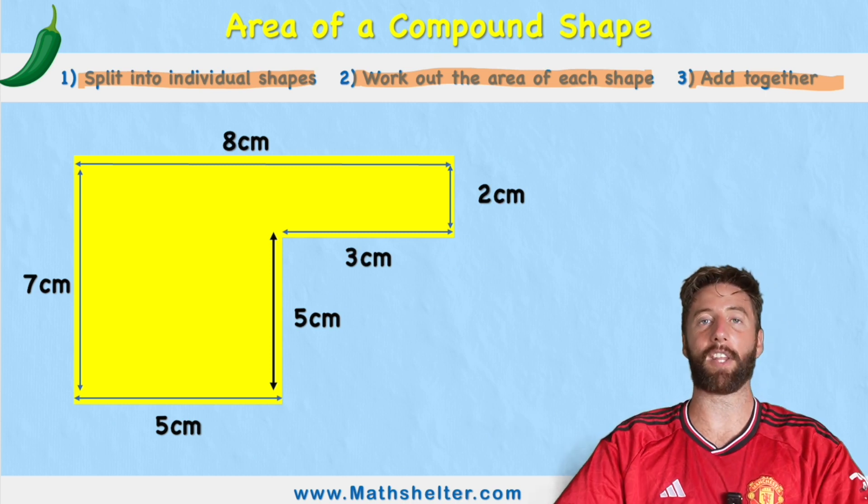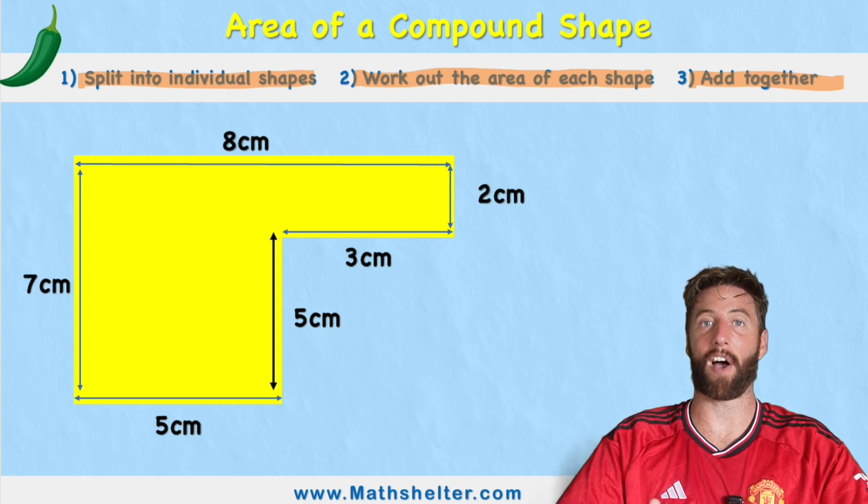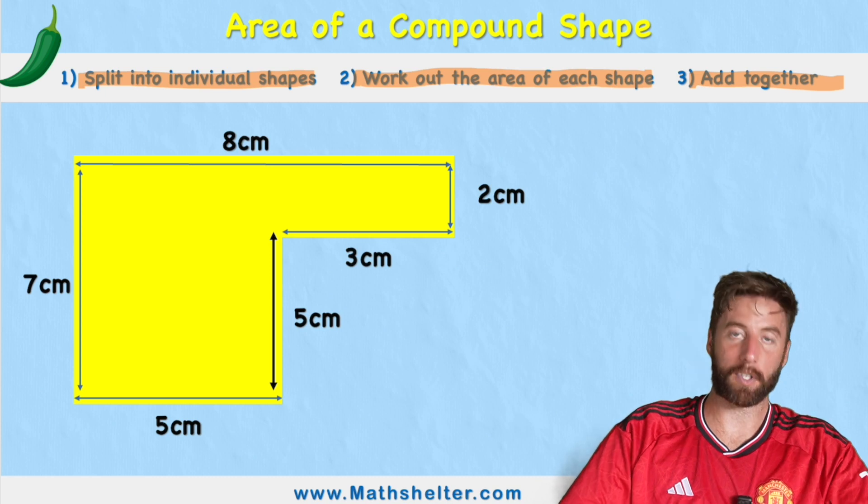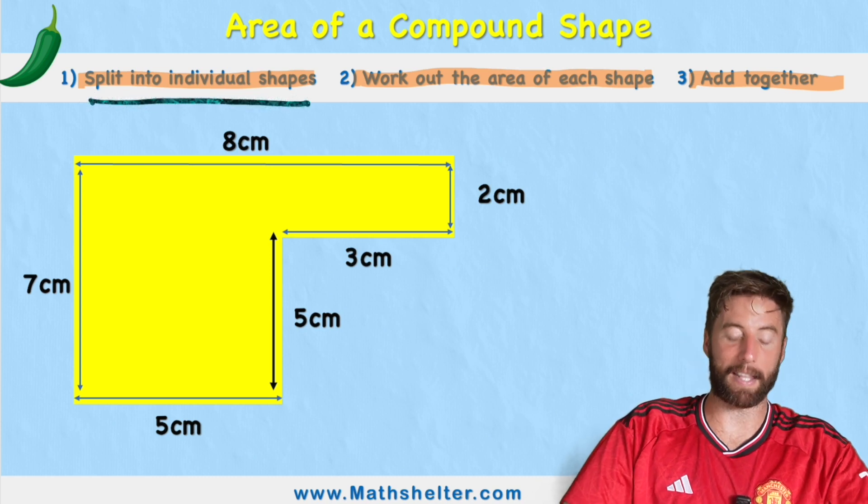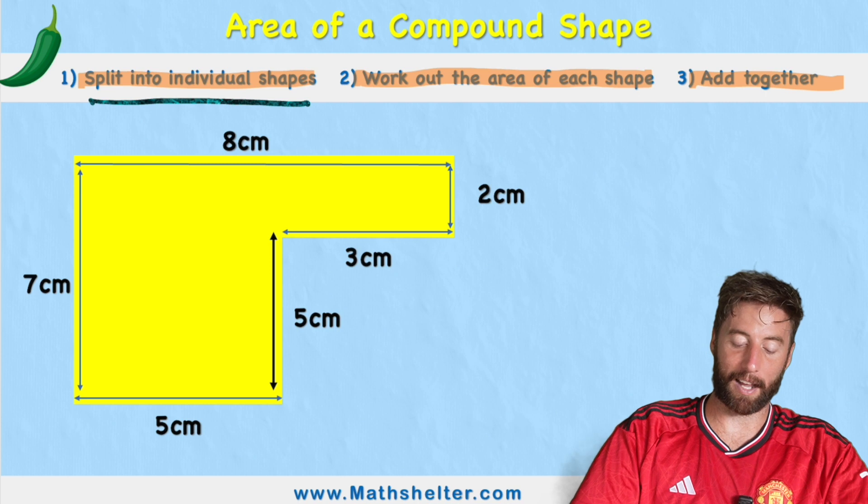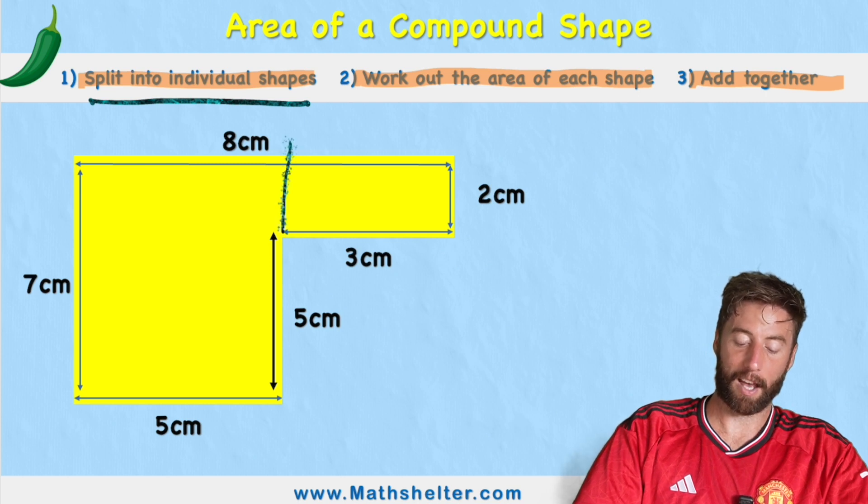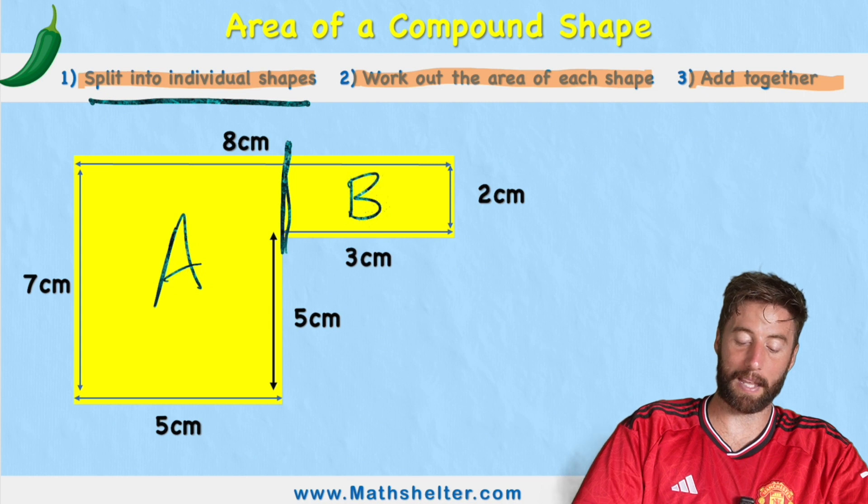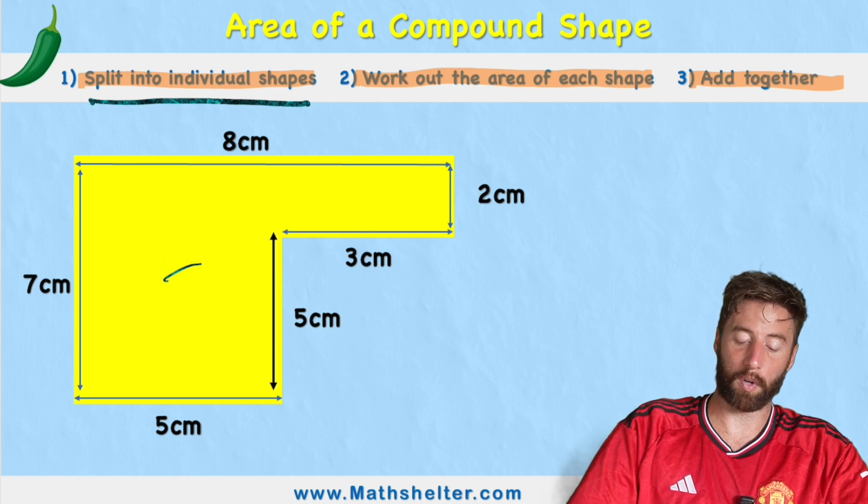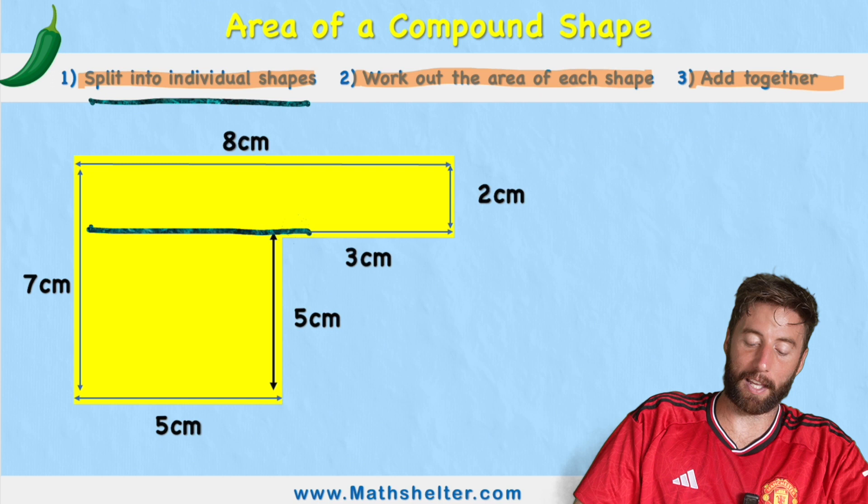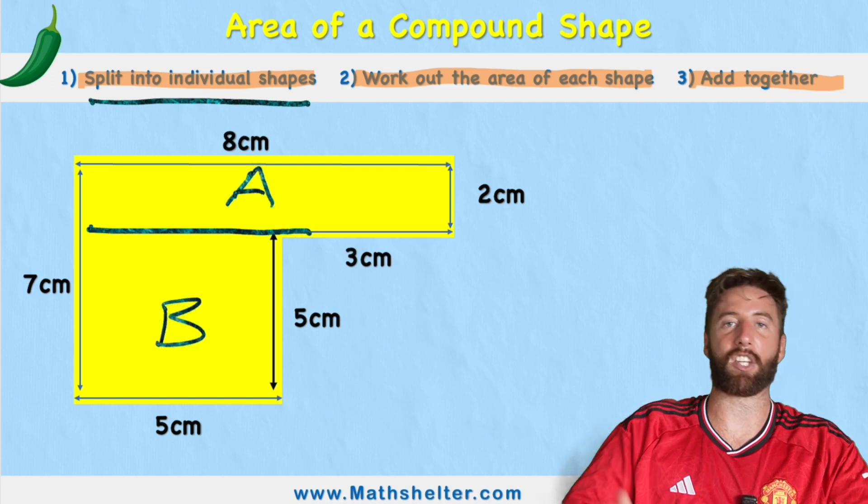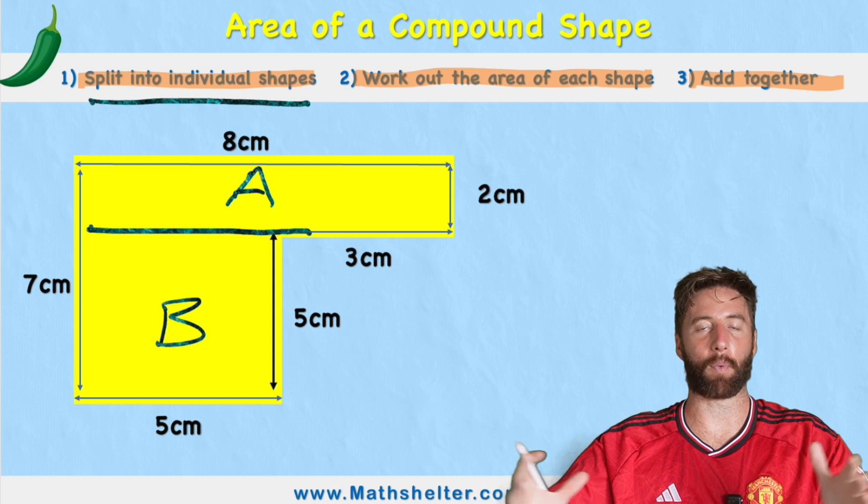So if you're going to master this video you need to know how to actually find the area of a shape. So let's start with step one which was to split these into individual shapes. So I can see that I have two rectangles and I could either cut it just here and call this A and this B or what I could do is I could split it along here and call this one A and this one B. It doesn't matter we're going to get the same at the end when we add it together.